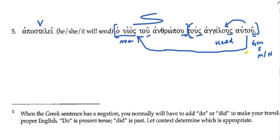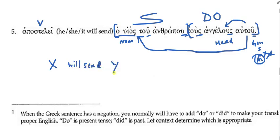'Son' is masculine, so I'd parse 'autou' as masculine rather than neuter. If I had seen a neuter noun and then 'autou,' I'd think neuter — but not here. So 'tous angelous autou,' 'his angels,' is the direct object. Once I've bracketed these things together I have a simple statement: using X and Y, it's basically X will send Y. What is X? The whole expression 'the son of man.' What is Y? His angels. That was easy, wasn't it?